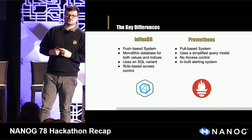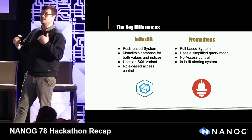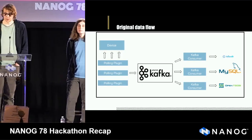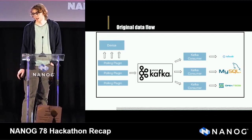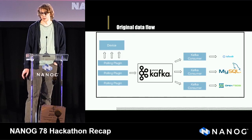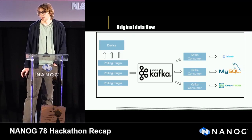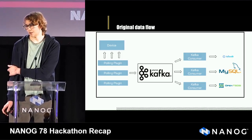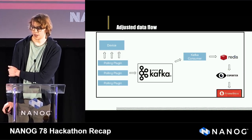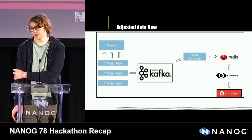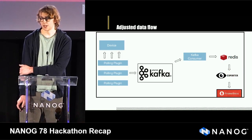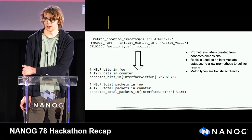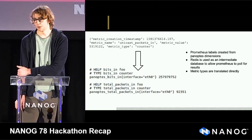Now I'll pass it to Basil. As Prometheus primarily uses a pull-based system to ingest data, this wasn't directly compatible with the push-based system that existed in Panoptes when we started. We modified the InfluxDB Kafka consumer in order to ingest data for Prometheus. We used Redis as an intermediate database to buffer data before it was pulled by the Panoptes exporter into Prometheus. We directly translated Panoptes dimensions into Prometheus labels to ensure we had metadata for the data we were ingesting.